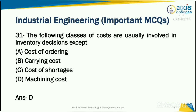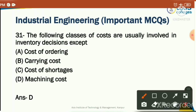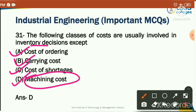Which of the following costs are usually involved in inventory decisions except? Options: cost of ordering, carrying cost, cost of shortages, or machining cost. Machining cost has no relation to inventory cost decisions — the correct answer is machining cost, which is excluded.